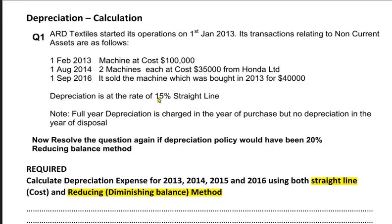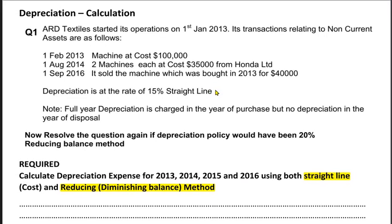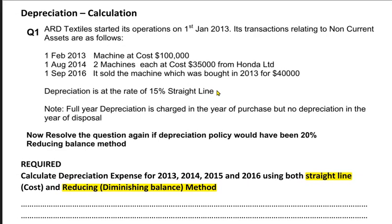We need to chart depreciation at a rate of 15% straight line. There are two methods: straight line (also known as cost method) and reducing or diminishing balance method. There are also two policies for charging depreciation. The note states: full year depreciation is charged in the year of purchase, but no depreciation is charged in the year of disposal.